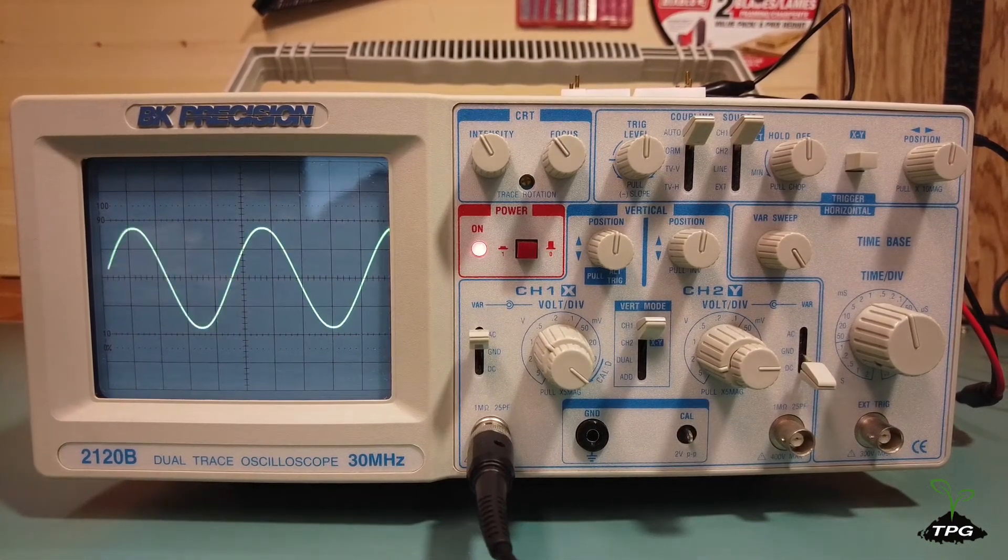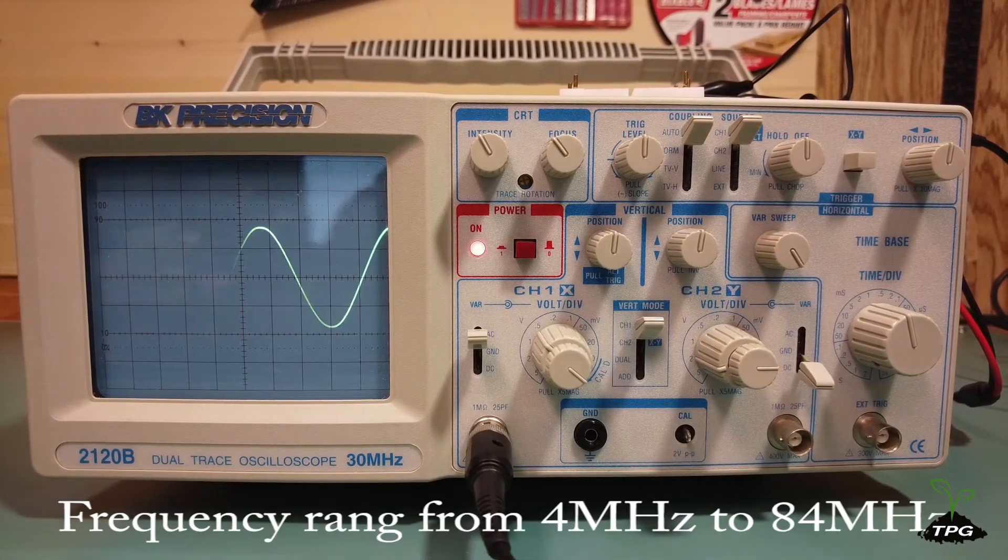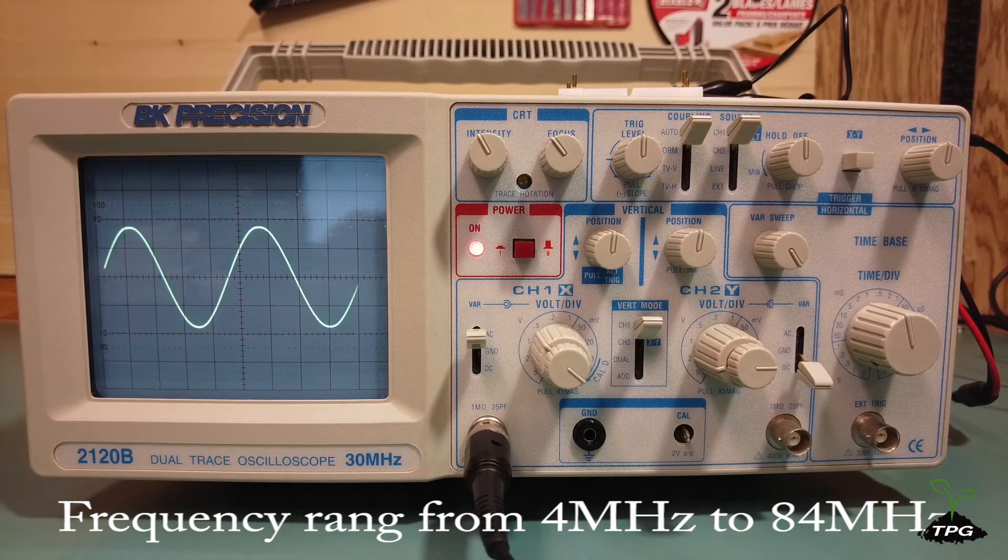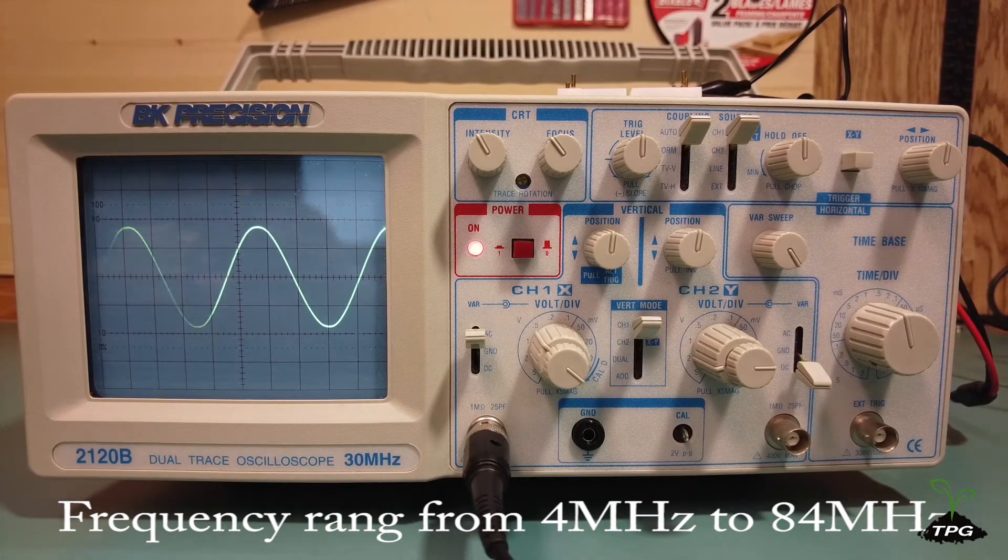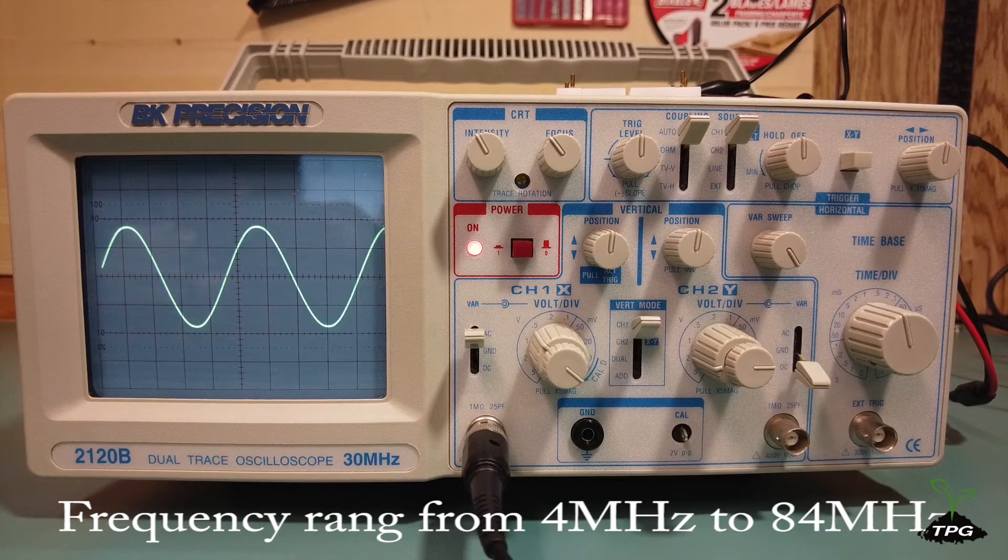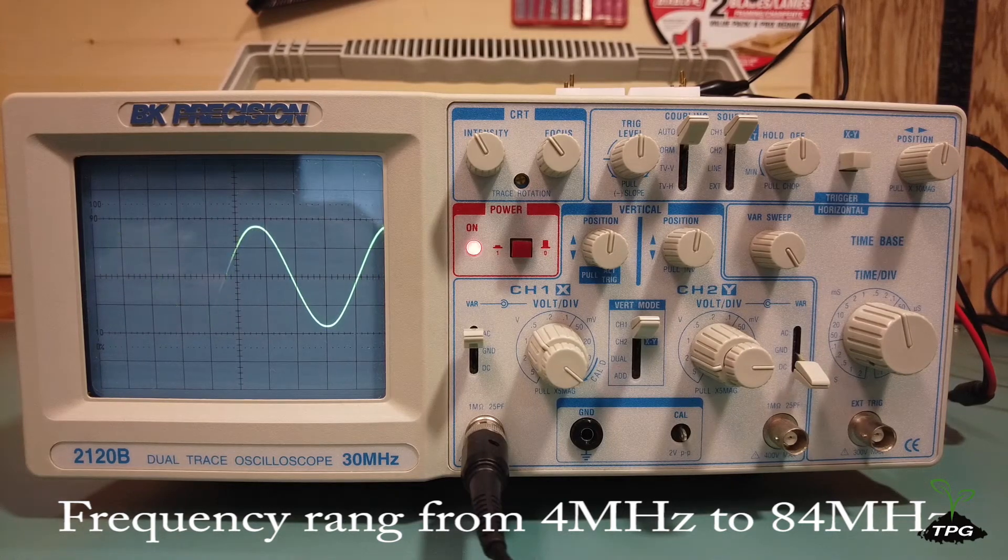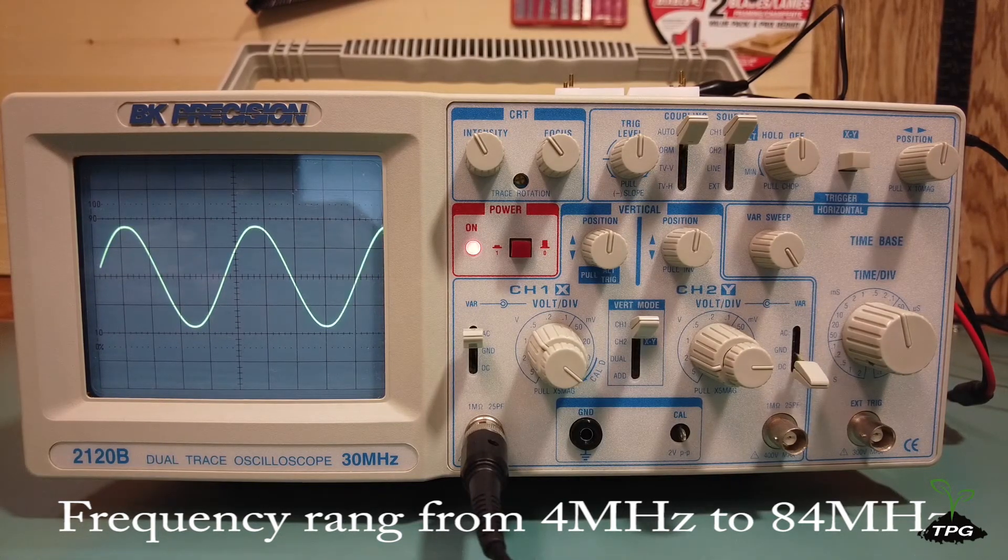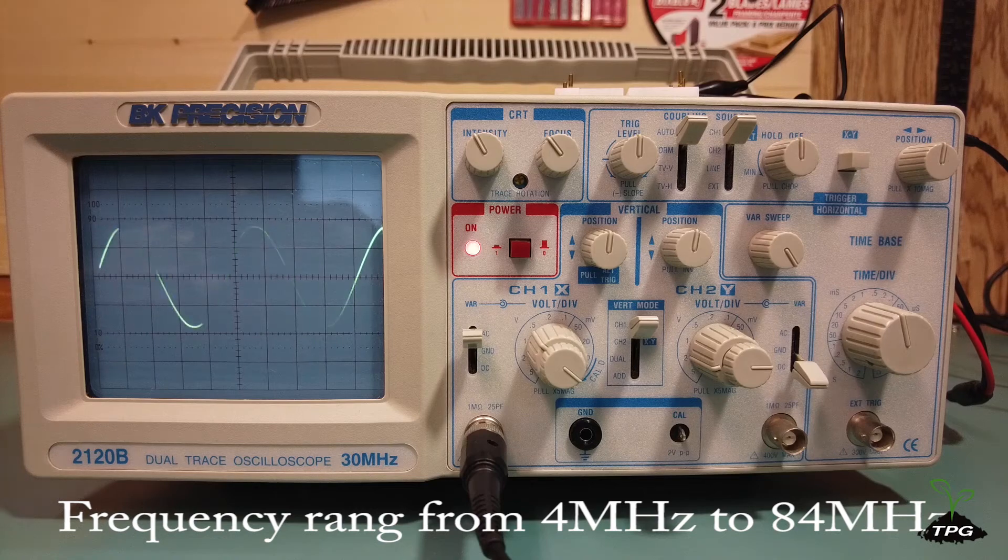In this video, we explore the bandwidth and waveform quality of a 30 MHz analog oscilloscope. The oscilloscope is tested with different frequency signals ranging from 4 MHz to 84 MHz. The comparison results are then summarized at the end.